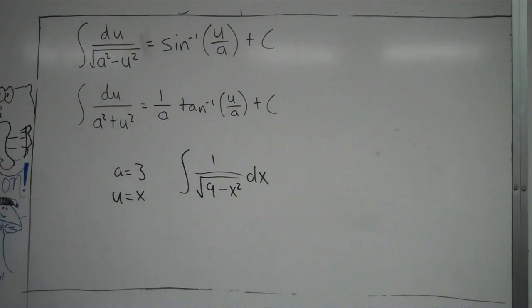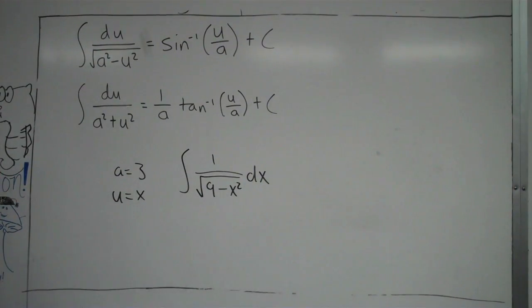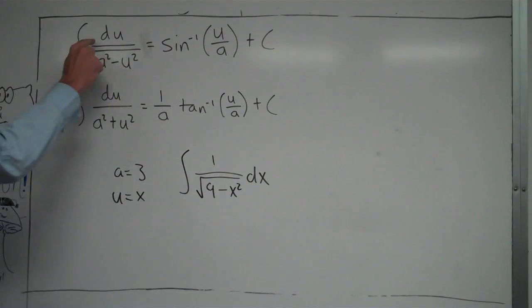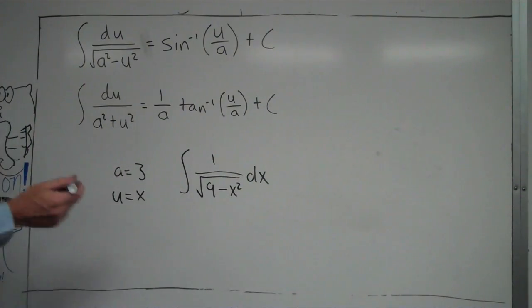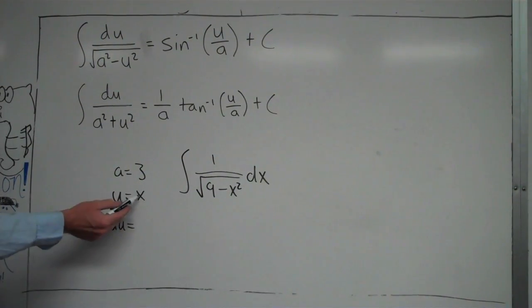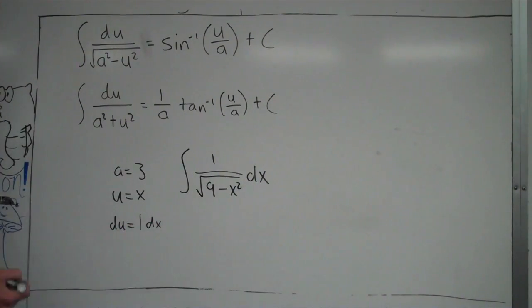And u equals x, since if you square that, it's x². Then we need to check that du is on top. Whatever u equals, find the derivative of that. In this case, the derivative of u—the derivative of x is 1, and we write dx.